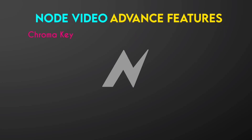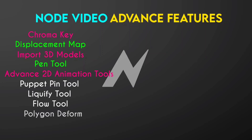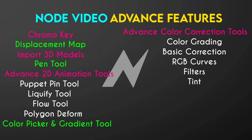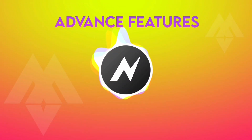Node Video's advanced features include: Chroma Key for background removal, Displacement Map Effect, 3D model import and 3D layer editing, pen tool for masking and selection, advanced 2D animation tools like Puppet Pin, Liquify, Flow, and Polygon Deform, Color Picker and Gradient tools, advanced color correction tools like Color Grading, Basic Color Correction, RGB Curves, Filters, Tint, Shift Channels, and Unsharp Mask, lots of masking tools, and Motion Tracker. Node Video wins this round for its many advanced features, including 3D layers, grouping layers, and advanced masking.